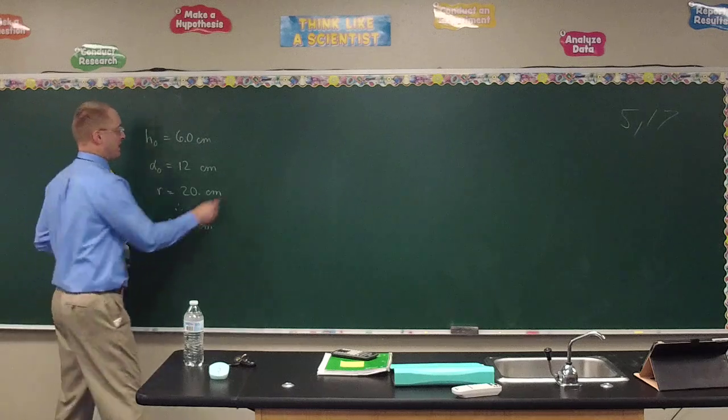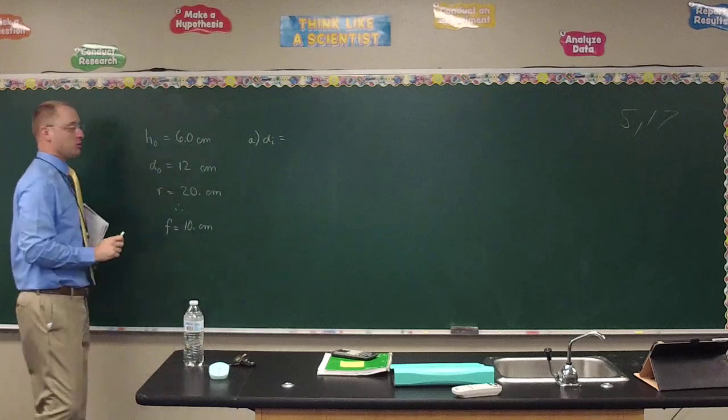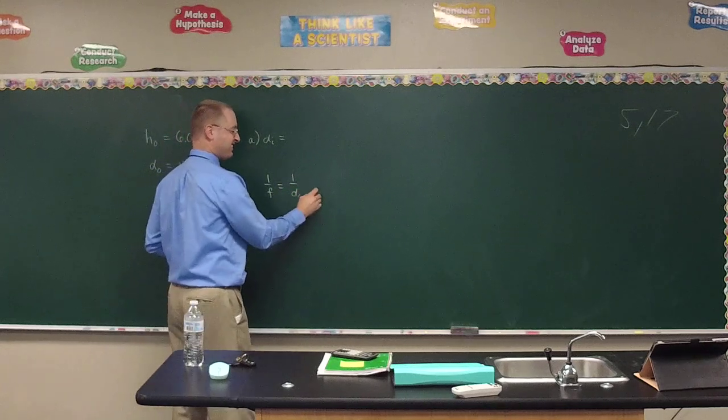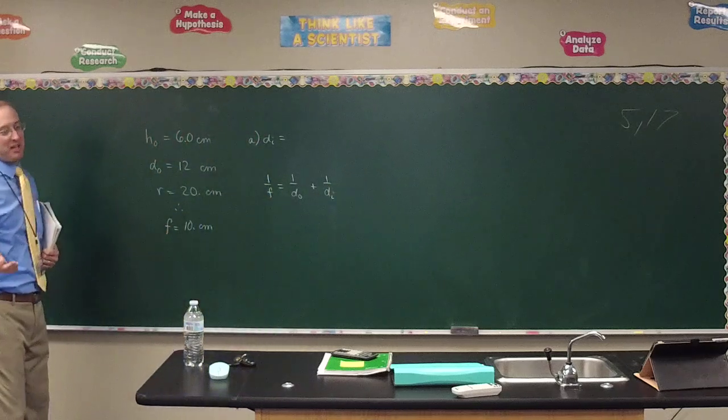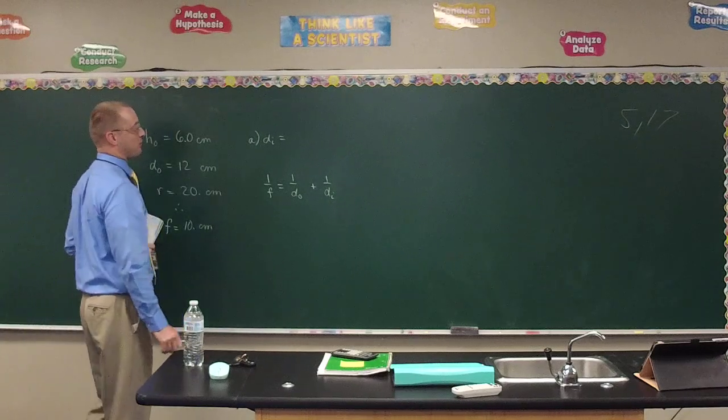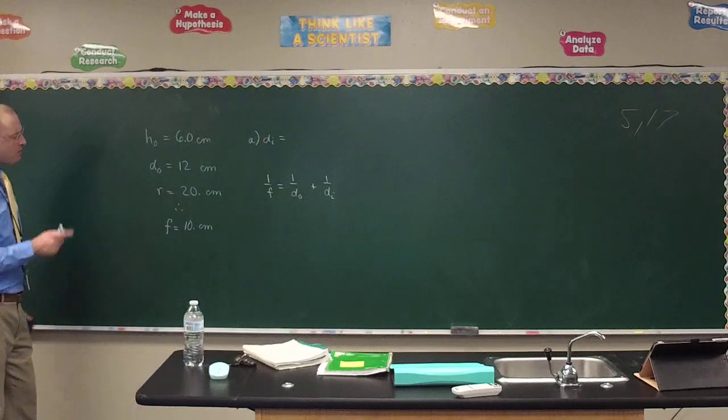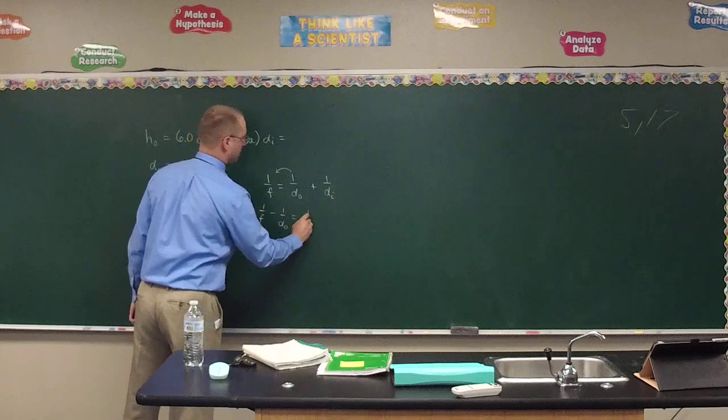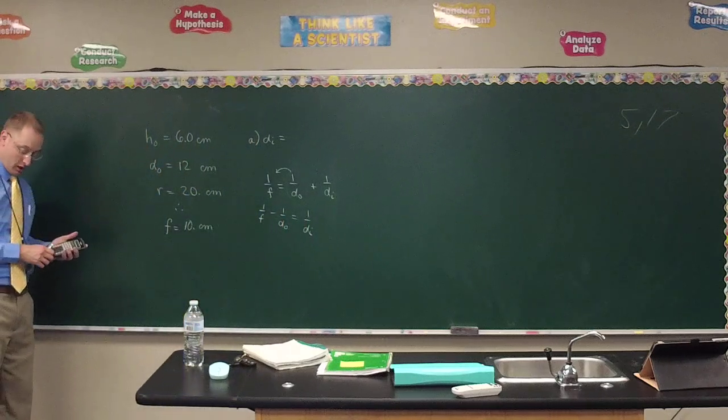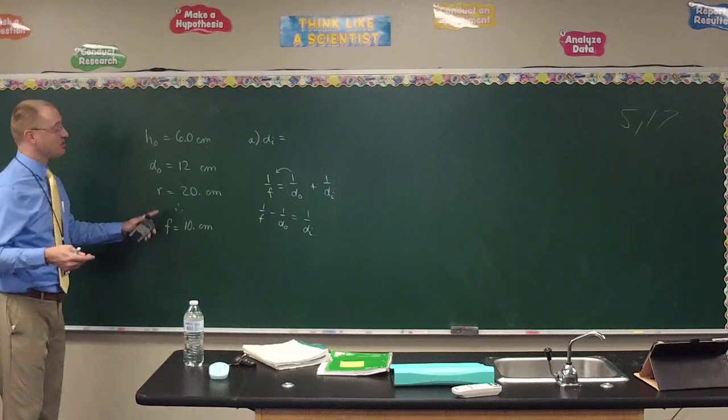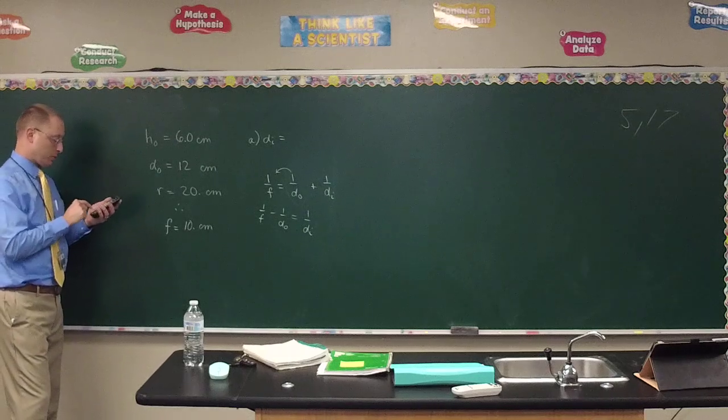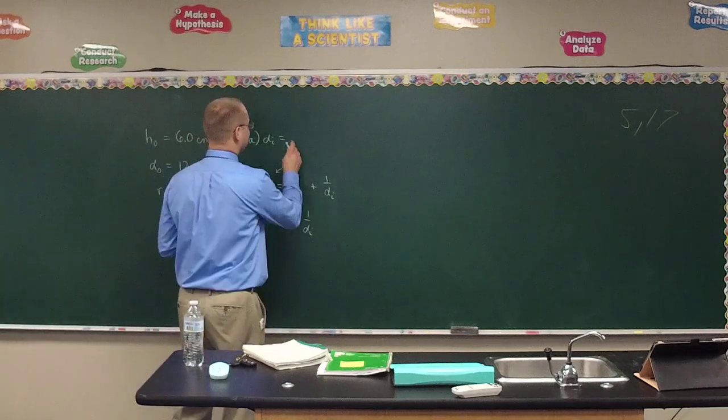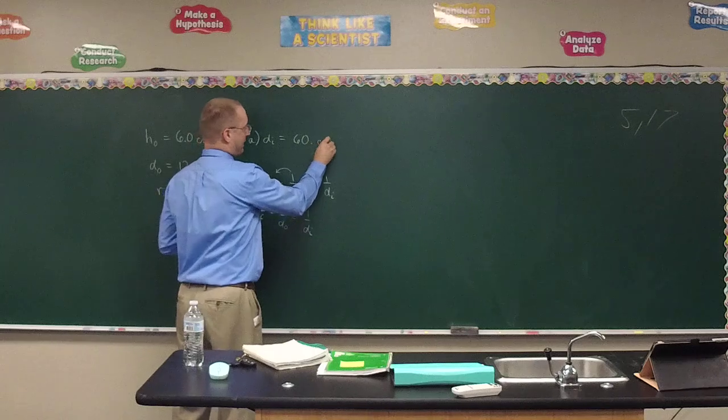In solving for the position of the image, or d sub i, what equation do we need to use? 1 over f equals 1 over d_o plus 1 over d_i. We subtract 1 over d_o from the other side. Take the reciprocal of 10 minus the reciprocal of 12, and we get this really crazy number. What do we need to remember? Take the reciprocal. And what is the image distance? 60 centimeters.